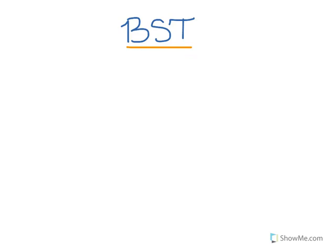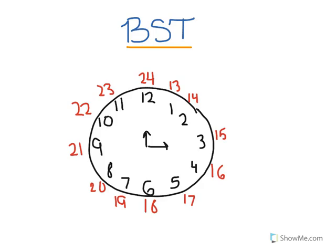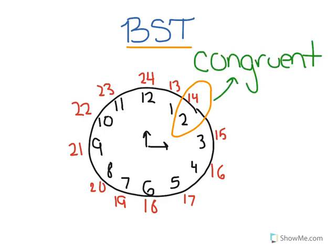Now let's go back to our clock analogy for another aspect of modular arithmetic. On a clock where you're representing 24 hours modulo 12, using only 12 digits to represent those hours, both the second and the 14th hours of the day are represented by the number 2 — 2 a.m. and 2 p.m. These two numbers, 2 and 14, are congruent modulo 12, because the distance between them is divisible by 12.